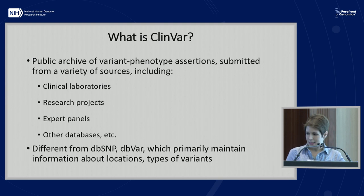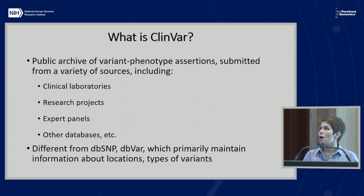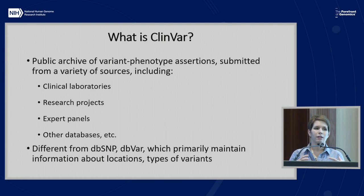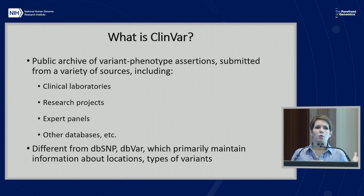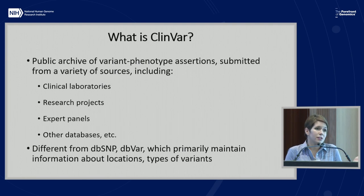So I'll start with ClinVar. What is it? It's a public archive of variant-phenotype assertions submitted from a variety of sources, which include clinical labs, research projects, expert panels, and other databases. It's different from other NCBI resources such as dbSNP or dbVar, which primarily catalog information about locations of variants and just the fact that they exist — smaller variants in dbSNP and larger copy number variants in dbVar. The way ClinVar is different is it catalogs the existence of the variant but also adds an assertion of what that variant means: this variant is pathogenic for this condition, this variant is uncertain in this particular setting — that kind of thing not found in dbSNP or dbVar.